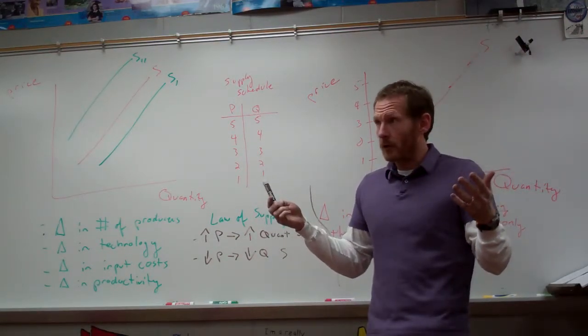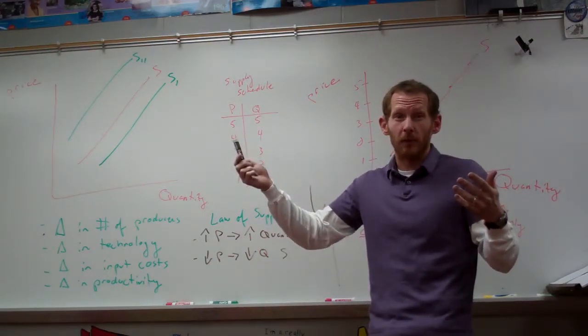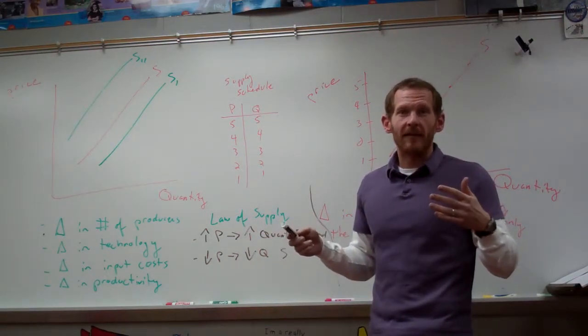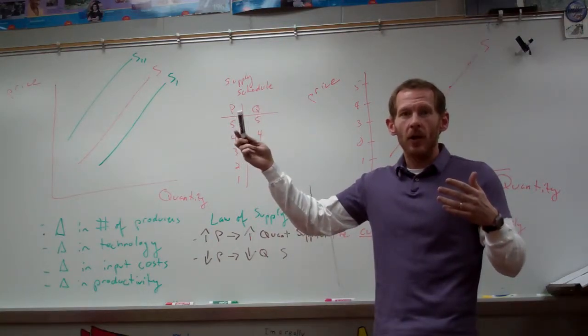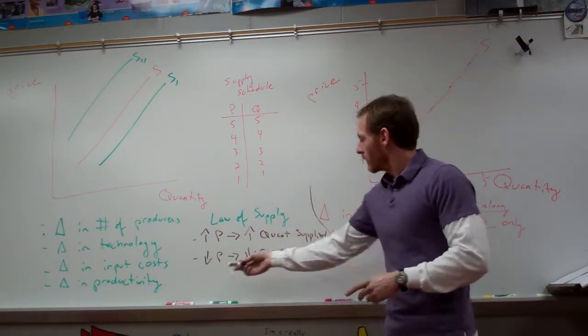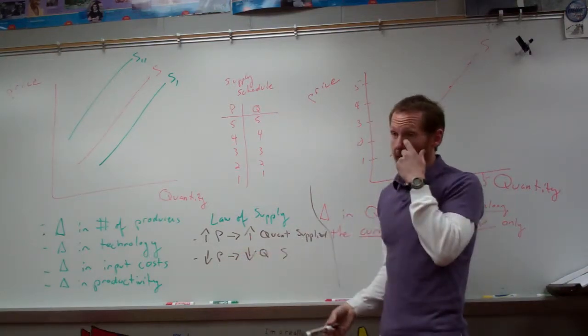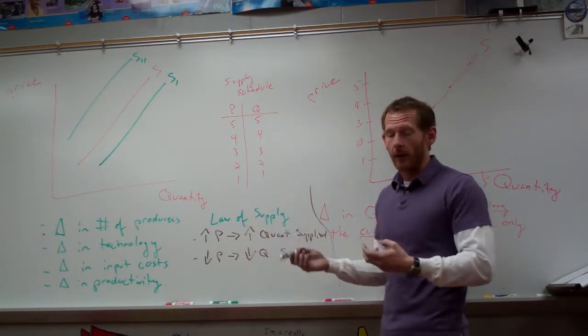For instance, Toyota would love to supply Camrys for $100,000 per car rather than $25,000 per car. So the higher the price, the more quantity they're willing to supply. Similarly, the lower the price, the lower the quantity they're willing to supply.